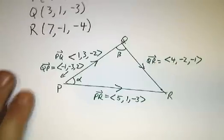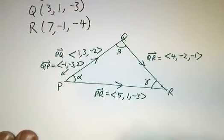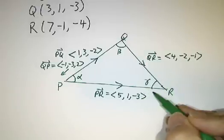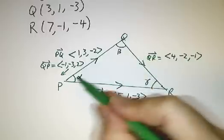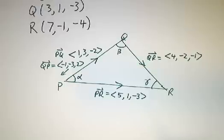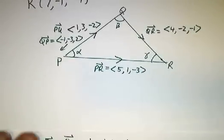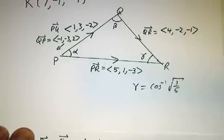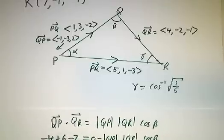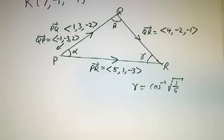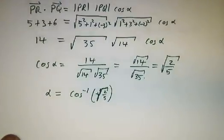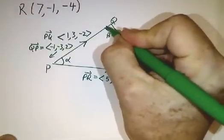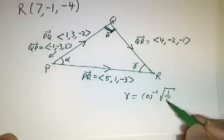If we want the final angle γ, we could play the same game, taking the inner product of RP and RQ, or we can just subtract the result, take π minus α minus β. Either way, we get that γ is the inverse cosine of the square root of 1 fifth. So there's our answers. The α was the inverse cosine of 2 fifths. β was 90 degrees, so this is actually a right angle. And γ is the inverse cosine of 1 fifth.